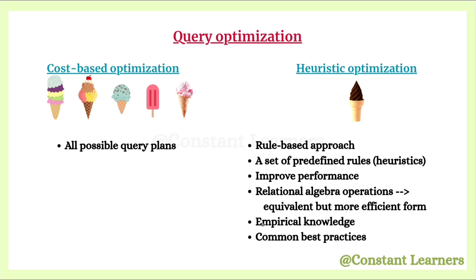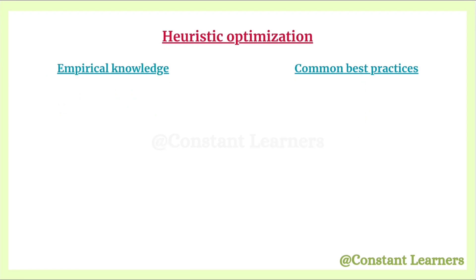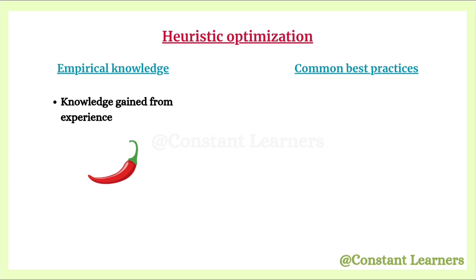Let's discuss what empirical knowledge and common best practices mean. Empirical knowledge means knowledge gained from experience — like the experience that eating spicy food at night gives you acidity, so you avoid it. In DBMS, the system knows from experience that applying filters, that is selections, early usually makes queries faster. That's empirical knowledge.